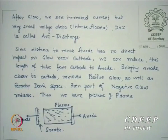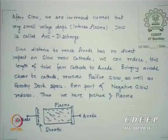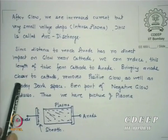Since the distance to the anode has no direct impact on the glow near the cathode, we can reduce the length — bringing the anode closer to the cathode. As we bring them closer, the positive column disappears first, then Faraday's dark space, and part of the negative glow may also reduce. The result is a plasma that touches the anode directly.